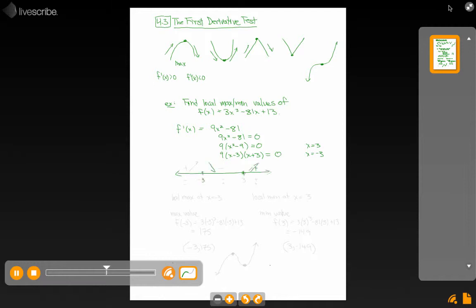So now what I need to do is figure out what's happening at those values. Is it a maximum or a minimum? Let's pick a number to the left of negative 3, negative 15, and I'm going to have negative times a negative which gives me a positive. So this graph is increasing everywhere to the left of that.